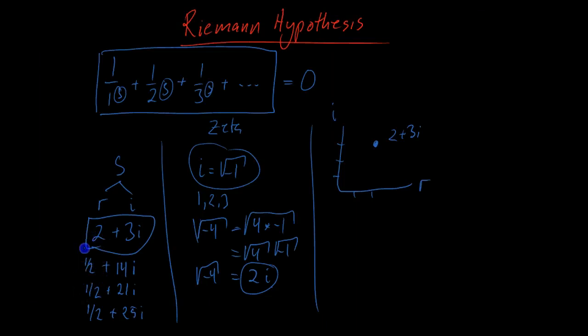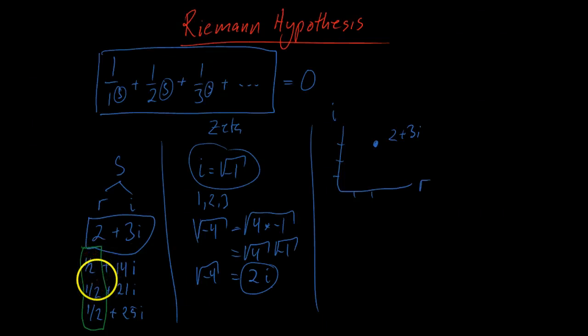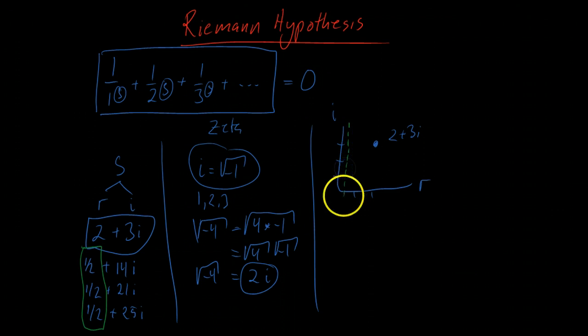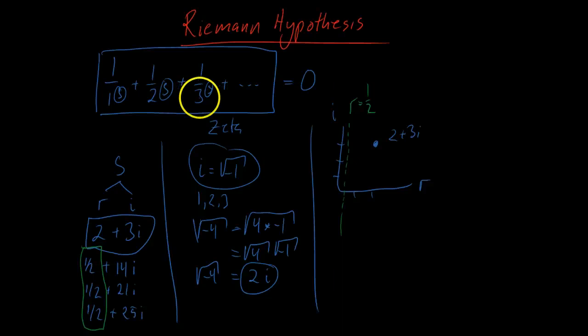You start seeing a pattern: whenever the real part of the complex number is one half, you get a zero. It's always the case that the real part is one half when you have a zero — you never see, say, 0.75 plus 14i giving a zero. So if you draw it on the complex plane, all the solutions found so far lie on the line where the real part equals one half. That's basically the Riemann hypothesis: every single solution to the zeta function equaling zero will have real part equal to one half, and all examples found so far confirm this.